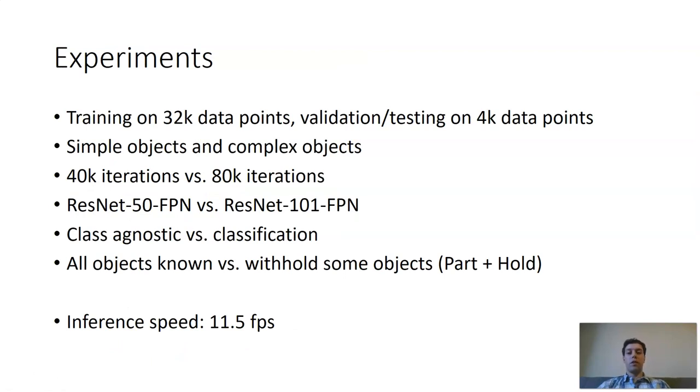Our experiments are trained for 32,000 data points, and for the validation and testing, we have some additional 4,000 data points each. Since there is currently no algorithm that tries to detect any grasp manifolds, we did some ablation studies with our own network. What we tried is to detect simple objects and complex objects, we used some different training settings, like different iterations, some different feature extractions, we used class agnostic neural networks versus a classification, and we even tried to predict some unseen objects. Our inference speed in the end was at 11.5 frames per second.